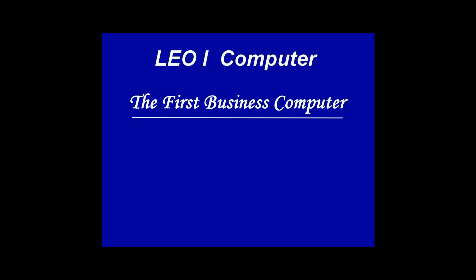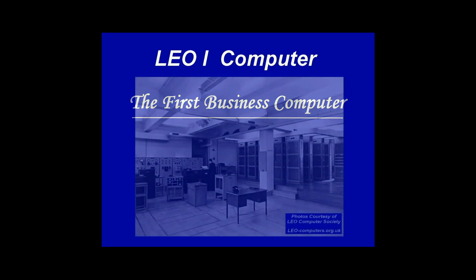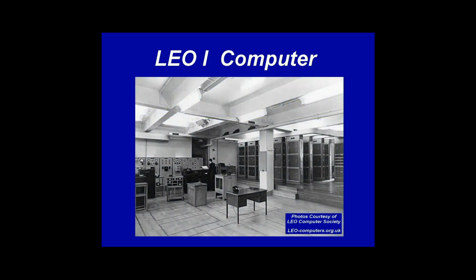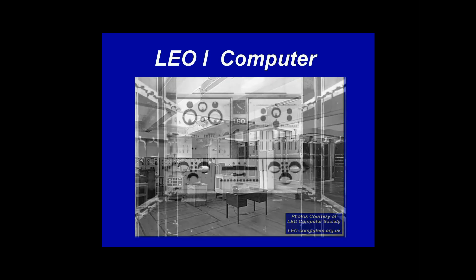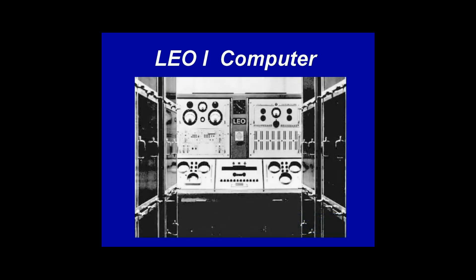LEO 1 — the first business computer. In October 1947, J. Lyons & Company, a British catering firm famous for its excellent tea shops, took a bold step in the commercial development of computers. They created the LEO, for Lyons Electronic Office. Released in 1951, it became the first business computer and ran the world's first regular routine office computer job.